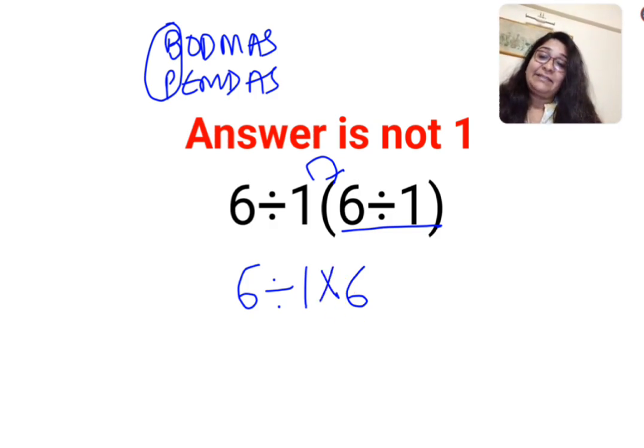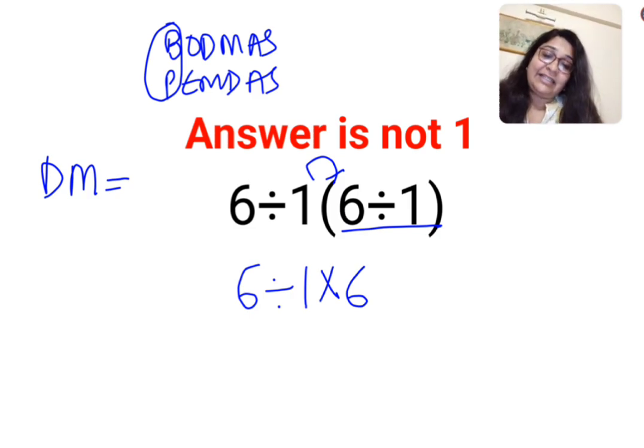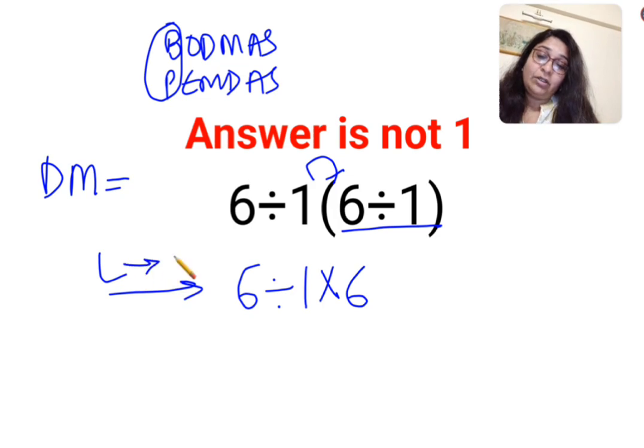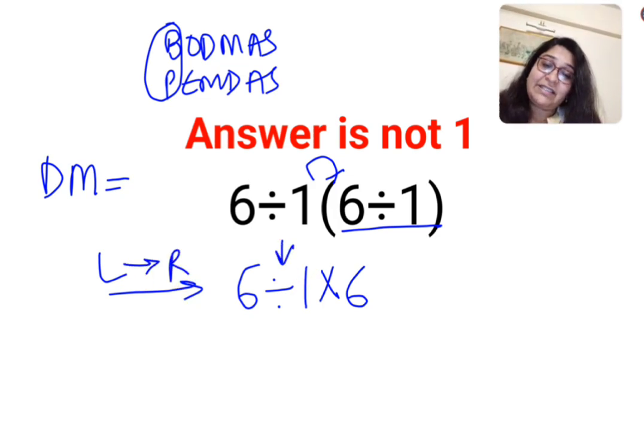Please remember, division and multiplication hold equal precedence. In this kind of situation, we need to always go from left to right. Whatever operation happens first on your left hand side has to be done first. So first we'll do 6 divided by 1, which is 6, multiplied by 6. So the answer for this question is supposed to be 36.